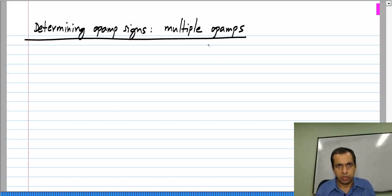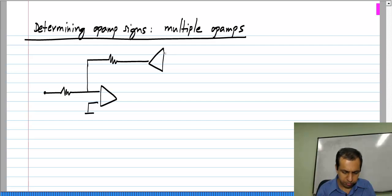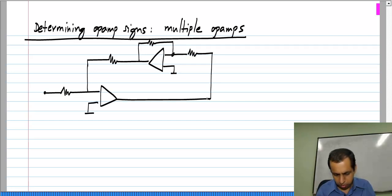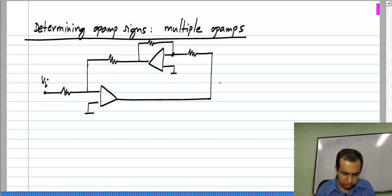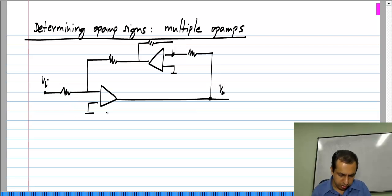Let me take some circuit. I would not worry about what the circuit is — you can determine that for yourself from circuit analysis. Maybe the circuit has an input voltage here and an output voltage there, but these are not relevant to determining the signs. We know that we will deactivate the inputs while determining the signs, and let me call this OPA 1 and OPA 2.